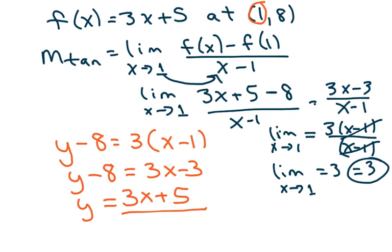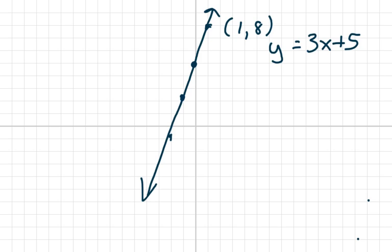And what you notice is these are the same. And so basically when they're asking you to draw it, you're getting the same line. So this one was our y equals 3x plus 5. And what they gave us was f of x equals 3x plus 5. So the tangent line touches everywhere on here. So it's the same line basically.